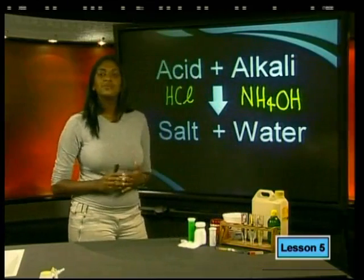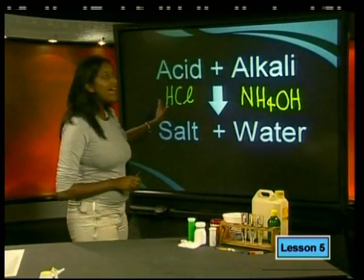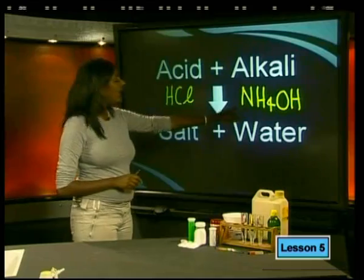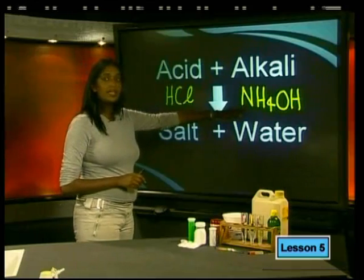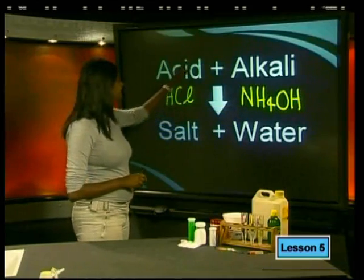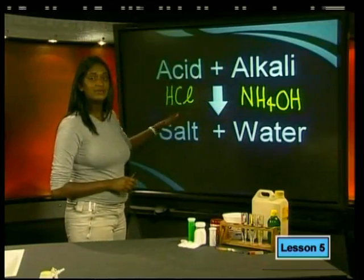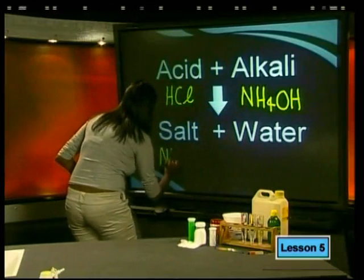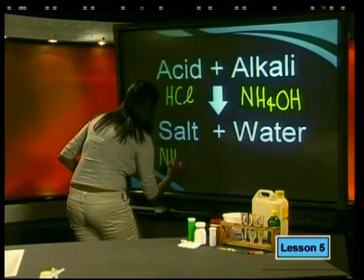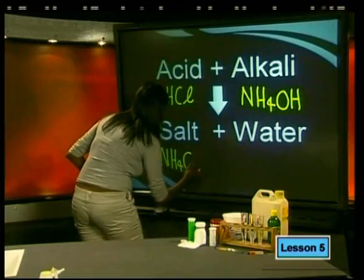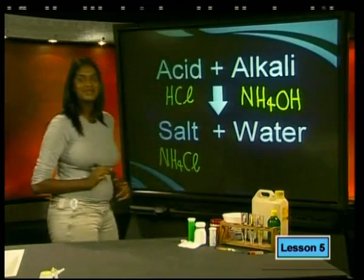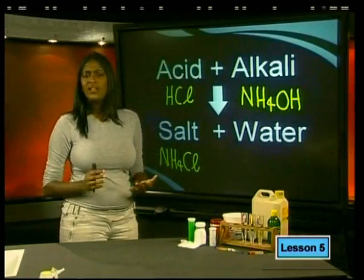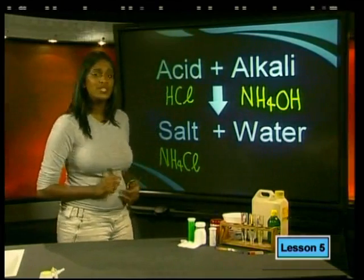To get the salt, the hydrogen from the acid is donated to the alkali, and the ammonium from the alkali joins the anion of the acid. Our salt will therefore be NH₄Cl. To complete the equation, all I need to do is add water as a product.